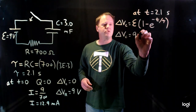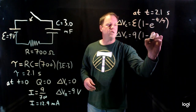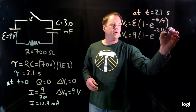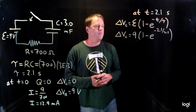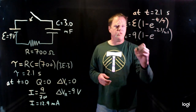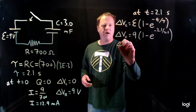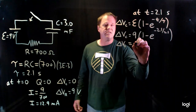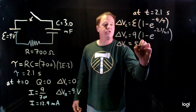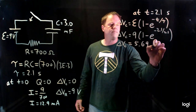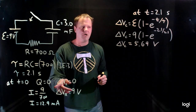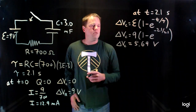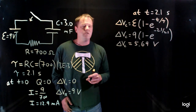Let's throw in the numbers: 9 volts × (1 − e^(−2.1/2.1)), so we get e to the minus one. Throwing that into the calculator, we get the voltage across the capacitor is 5.69 volts. We started with zero and the voltage builds up from zero to 5.69 volts.